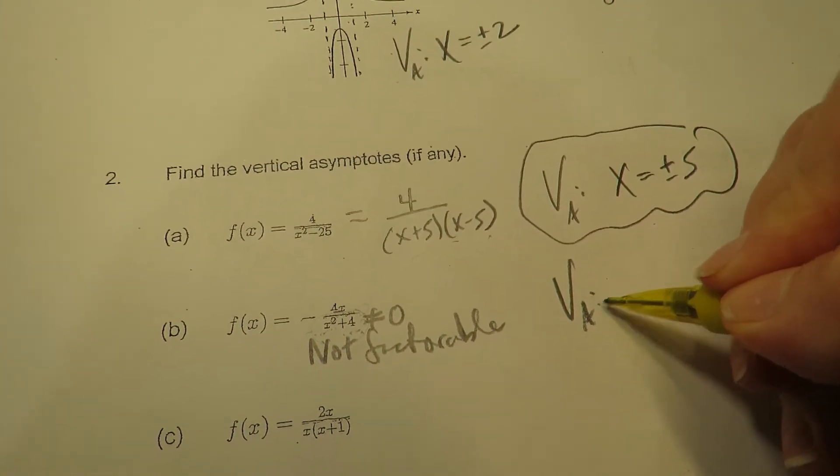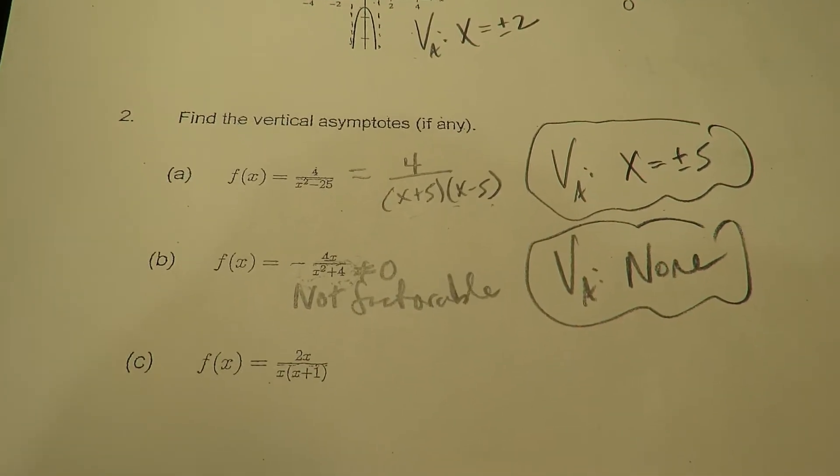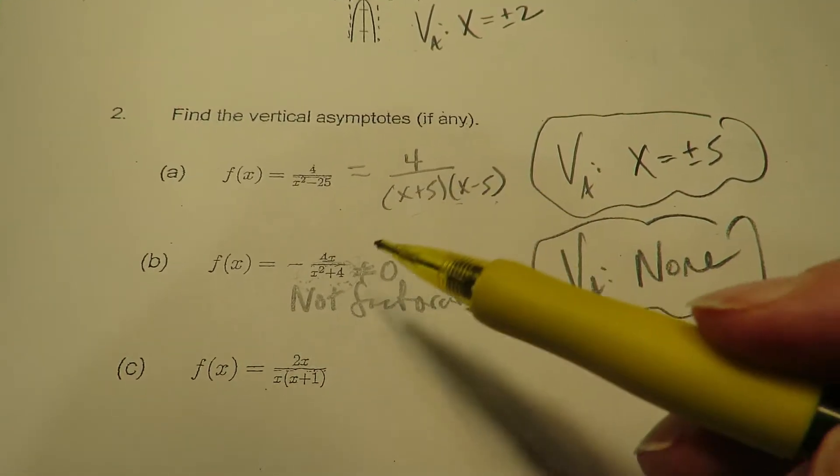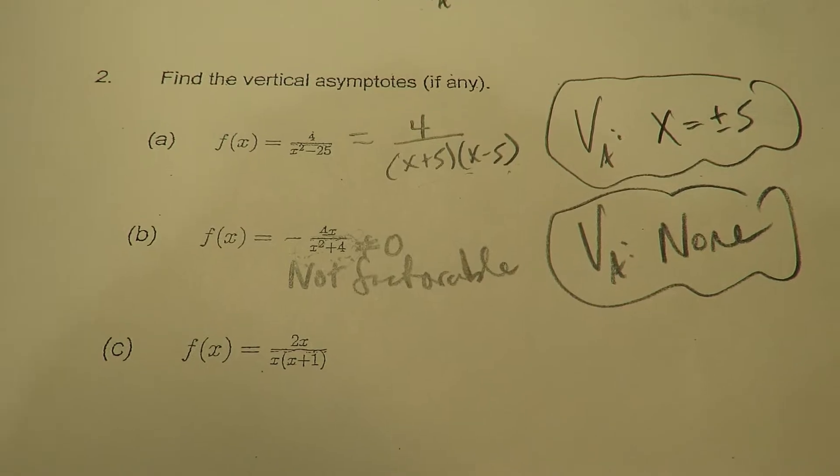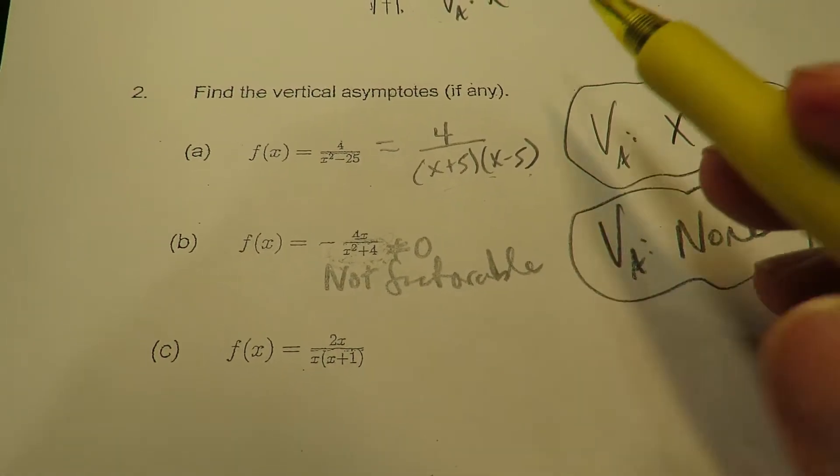So in terms of this one, the VA has none. So we cannot assume every graph is going to have a vertical asymptote, because it's a fraction. This one doesn't have a vertical asymptote in it.